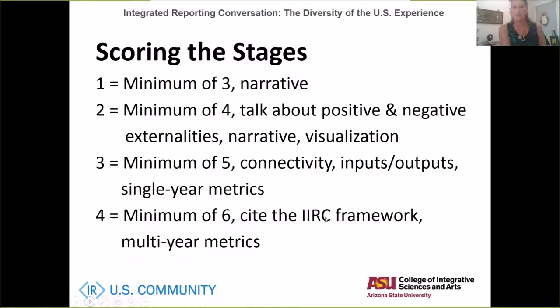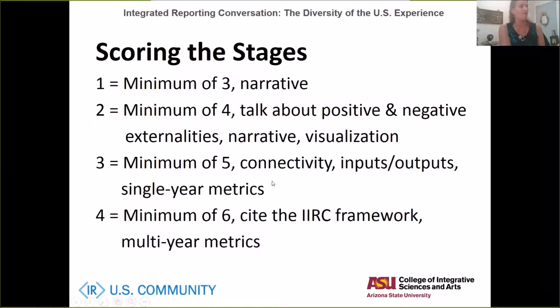The fourth category is whether they talk about the framework — externalities, materiality, risk, and the seven principles and eight content elements of the IIRC framework. Based on that, a score of one requires a minimum of three capitals in narrative format. A two requires four capitals, discussion of positive and negative externalities, and some visualization. A three requires a minimum of five capitals using connectivity language like inputs and outputs. A four — best practice — uses all six capitals, cites the IIRC framework, and tracks resources over multi-year metrics.